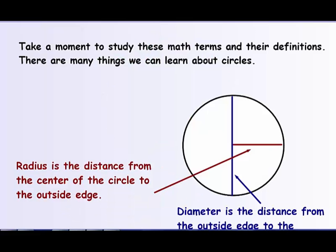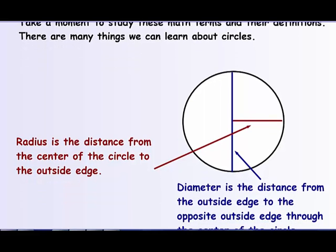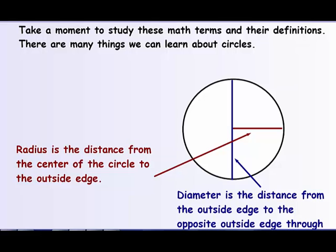In our first slide, we have to talk about some of the vocabulary of a circle. Take a moment to study these math terms and their definitions. One of them: what is the radius? The radius is the distance from the center of the circle to the outside edge. I'm going to use the letter R. This arrow is pointing to the radius — from the center to the outside edge — so it only goes halfway across the circle.